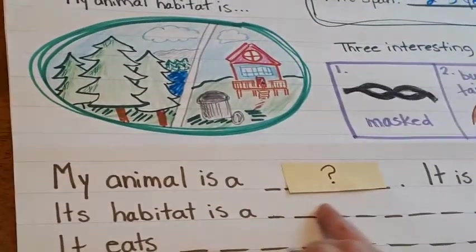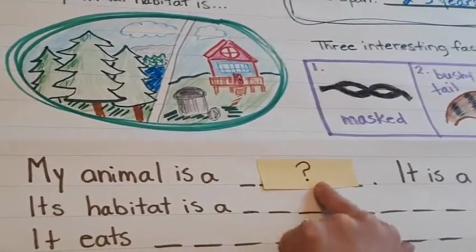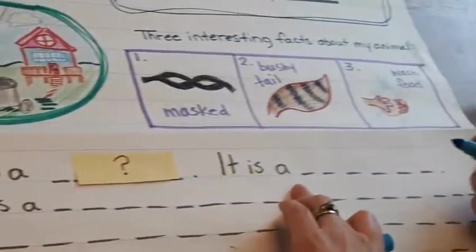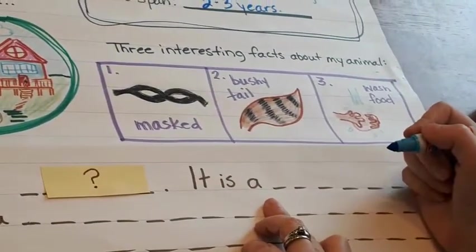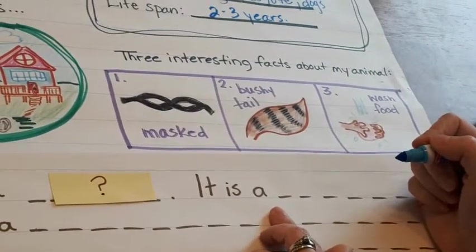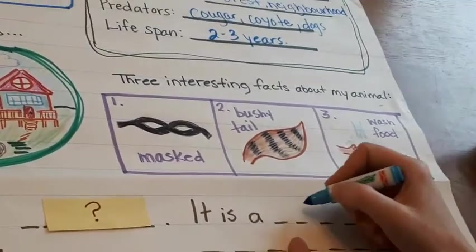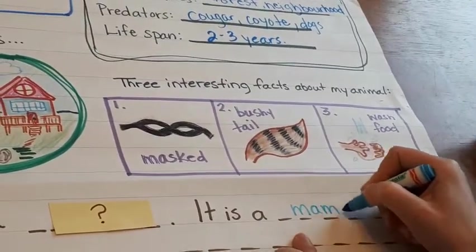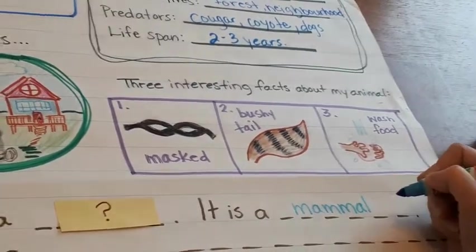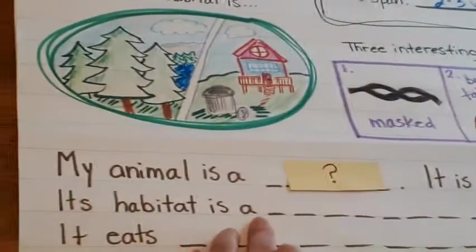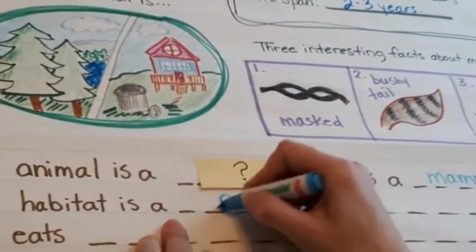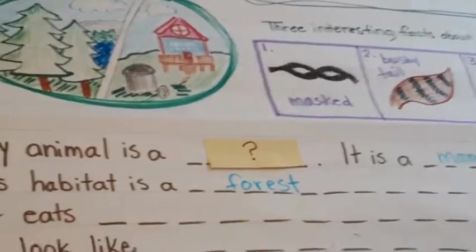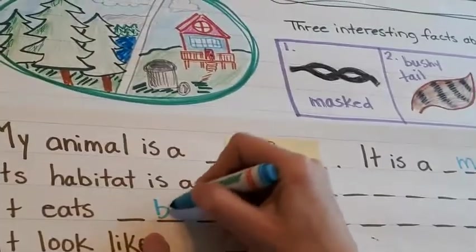My animal is a — I'm going to keep mine secret, but you can write yours in. Remember we talked about amphibians, birds, insects, and mammals? Well, my animal is a mammal, so I'm going to write that here. Its habitat is a — I'll put forest.